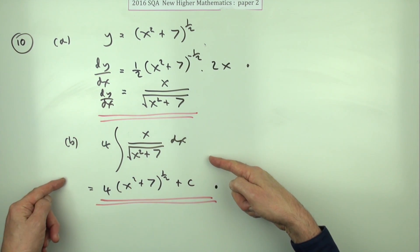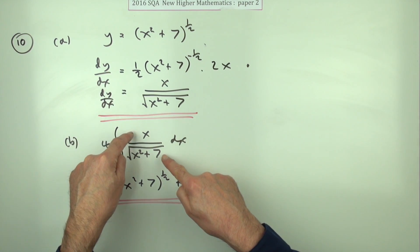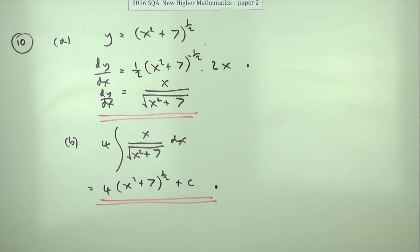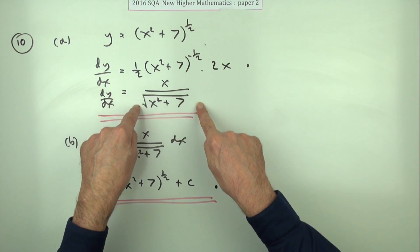So the essence of this question was simply looking for the connection between your derivative and the integrand, the part inside that integration. And of course you'd see that easily if you wrote it in this form.